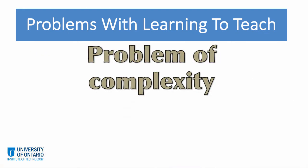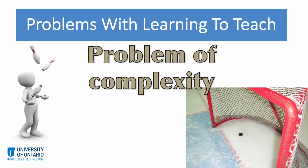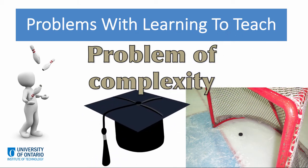The second problem the authors identify is the problem of complexity. Complexity refers to juggling academic and social goals with the complex relationships that occur within the learning environment. The relationship is between the educator, learners, and the subject matter. For example, educators need to consider the ever-changing needs of the learners and the unexpected events of the learning environment, rather than just plowing through the content.